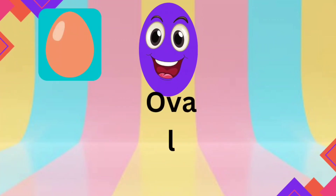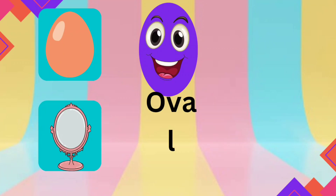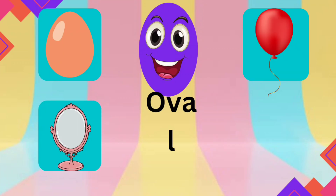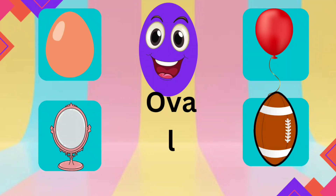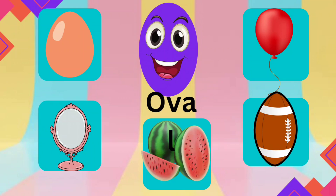For example, you can eat me as an egg. You can use me as a mirror. You can blow me as a balloon. You can play me as an American football. You can eat me as a watermelon. All these objects can be seen in the shape of an oval.